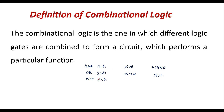By combining different gates we can build a circuit. That circuit will perform a particular function or particular task. That circuit is known as combinational logic or combinational circuit. The combinational logic is the one in which different logic gates are combined — by combining different gates we can build a circuit that performs a particular function.